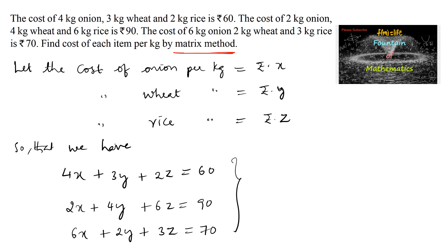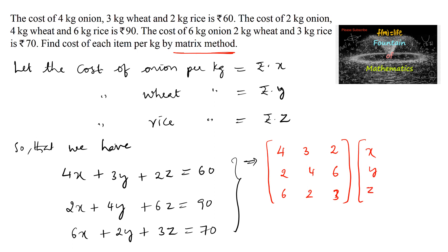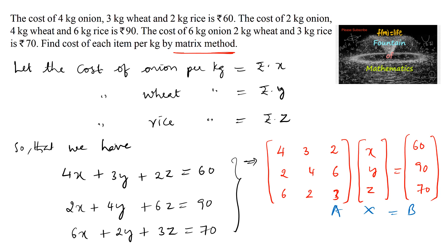Now we need to convert them into matrix form. Taking the coefficients, the coefficient matrix A is [4, 3, 2; 2, 4, 6; 6, 2, 3], the variable matrix x is [x; y; z], and the constant matrix B is [60; 90; 70]. This is in the form AX = B, where A is the coefficient matrix, X is the variable matrix, and B is the constant matrix.